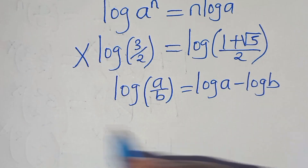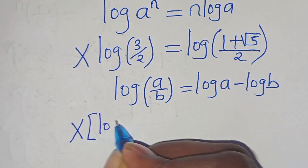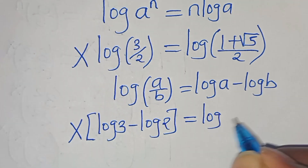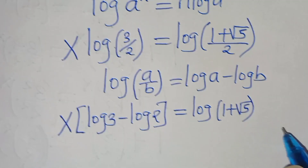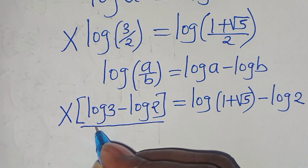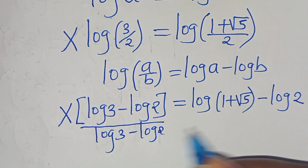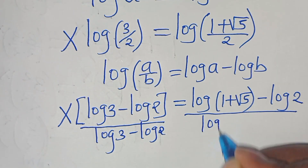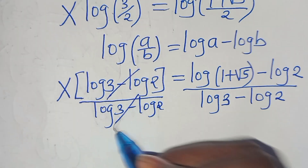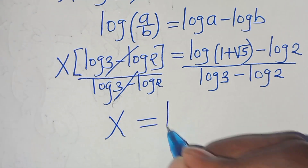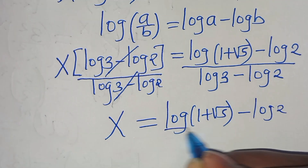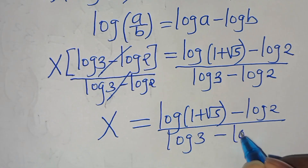Applying the logarithm quotient property, we have x times (log 3 minus log 2) equals log(1 plus square root of 5) minus log 2. Dividing both sides by (log 3 minus log 2), we get x equals [log(1 plus square root of 5) minus log 2] divided by [log 3 minus log 2].